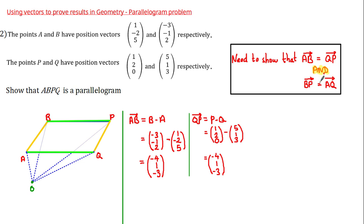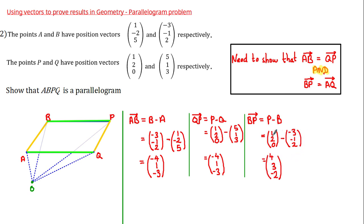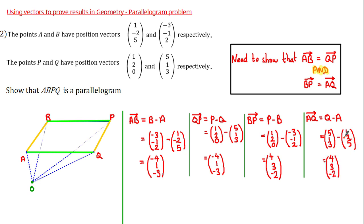Moving on to vector BP: BP equals P minus B, which is (1, 2, 0) minus (-3, -1, 2). That gives 1 minus (-3) = 4, 2 minus (-1) = 3, and 0 minus 2 = -2, so BP = (4, 3, -2). Lastly, vector AQ equals Q minus A, which is (5, 1, 3) minus (1, -2, 5), giving 5 minus 1 = 4, 1 minus (-2) = 3, and 3 minus 5 = -2. So AQ = (4, 3, -2), and therefore vector BP equals vector AQ.